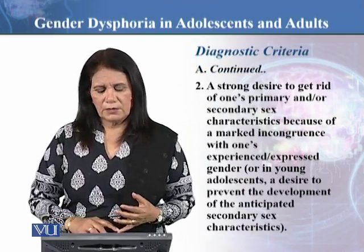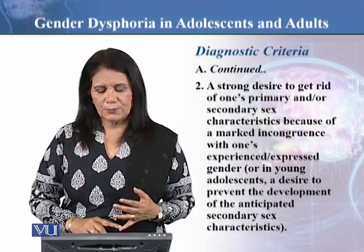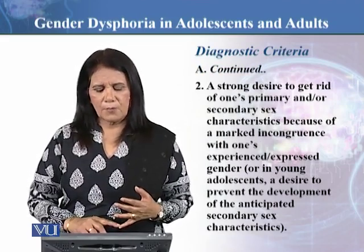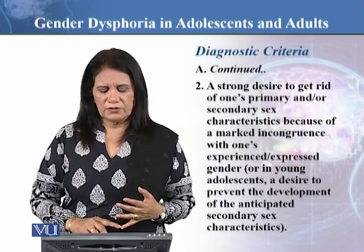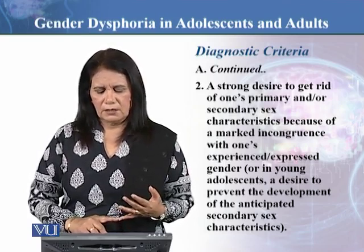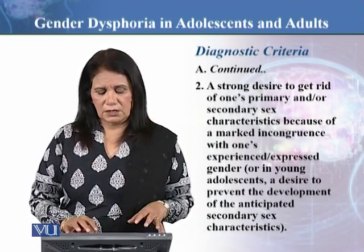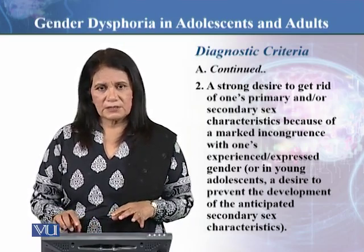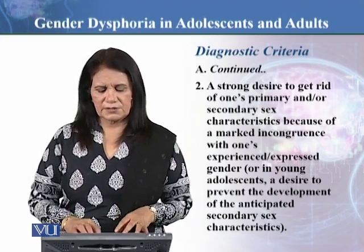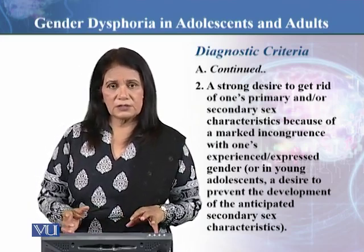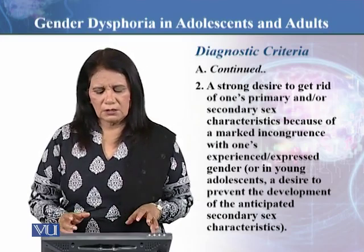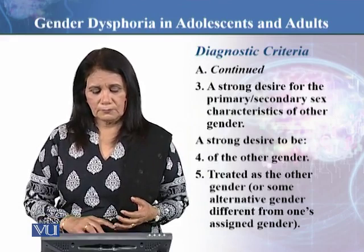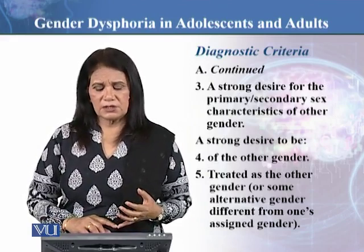Feature two is a strong desire to get rid of one's primary and/or secondary sex characteristics because of a marked incongruence with one's experienced or expressed gender. In young adolescents, this may be a desire to prevent the development of anticipated secondary sex characteristics, or if they have already developed, a desire to get rid of them.